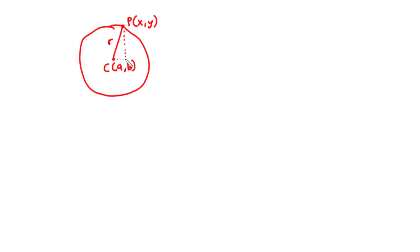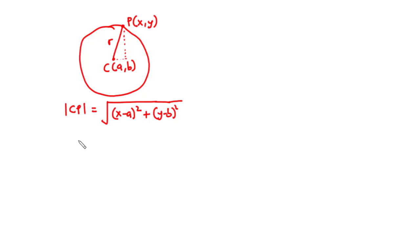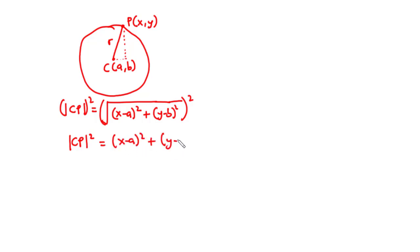Now let's find the distance between C and P. Using the distance formula, this is given by the square root of (X minus A) squared plus (Y minus B) squared. We can eliminate the square root by squaring both sides: CP² = (X − A)² + (Y − B)². Since the distance between C and P is the radius, we have R² = (X − A)² + (Y − B)².